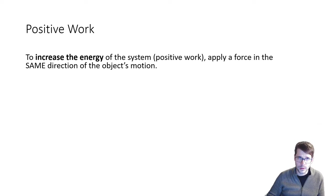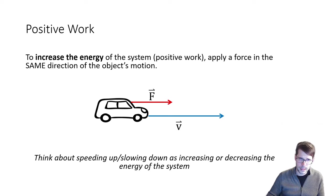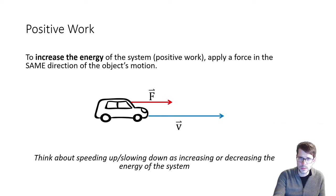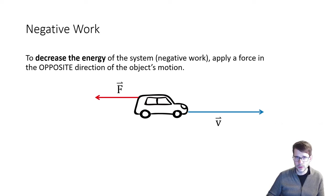When we talk about positive work, we need to apply a force in the same direction as the object's motion — the force and velocity, or force and displacement, have to be in the same direction. If you push it in the same direction it's moving, then it will speed up. And to decrease the energy, to do negative work, we'd apply a force in the opposite direction. So if it's moving forwards, a backwards force like friction would do negative work on this object.